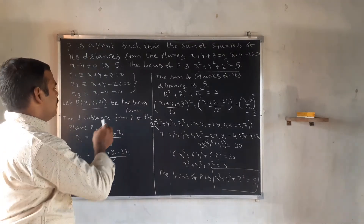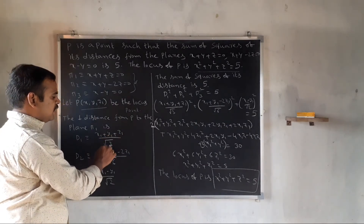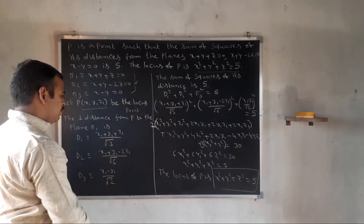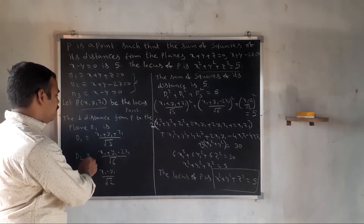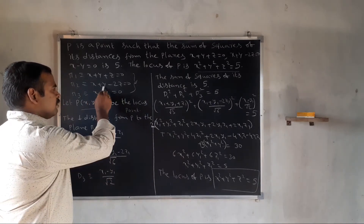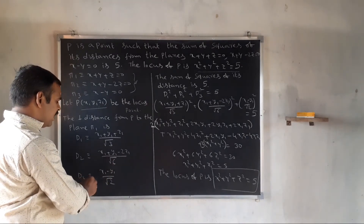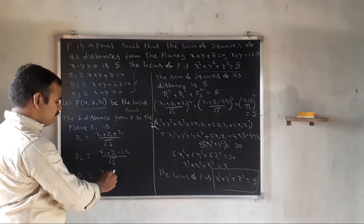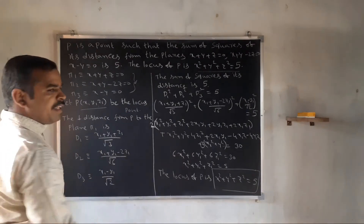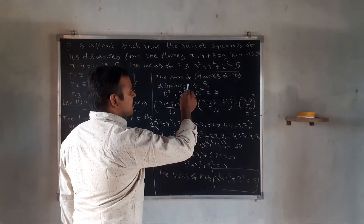The perpendicular distance d1 from P to the first plane is x1 plus y1 plus z1 divided by square root of 1 plus 1 plus 1, which is root 3. d2 equals x1 plus y1 minus 2z1 divided by square root of 1 plus 1 plus 4, which is root 6. d3 equals x1 minus y1 divided by square root of 2. The sum of squares of these distances equals 5.